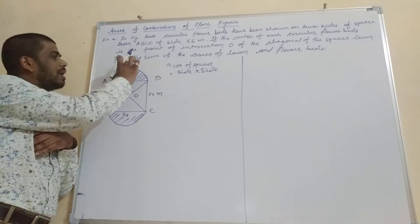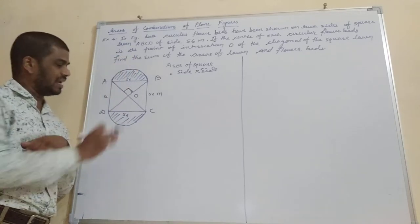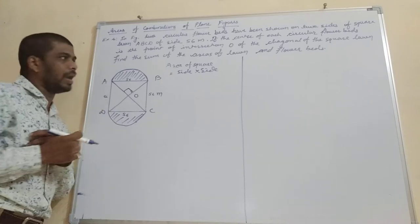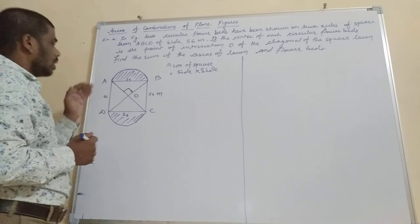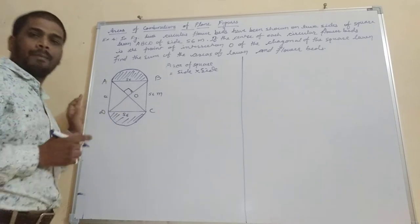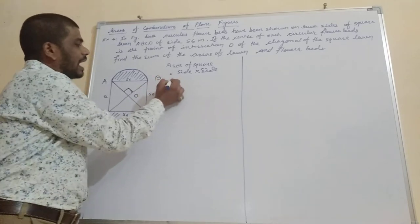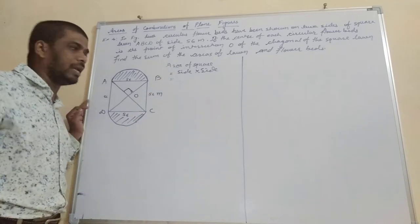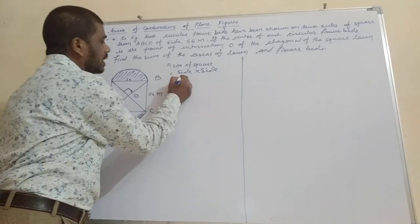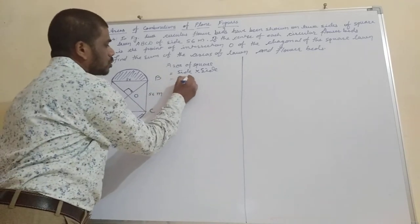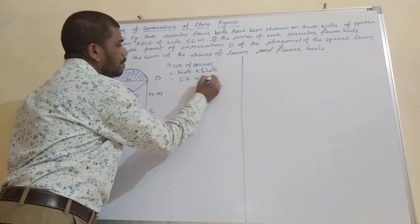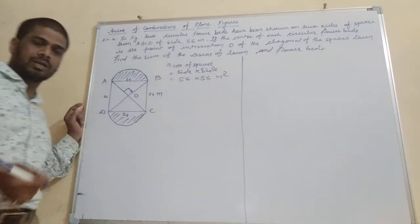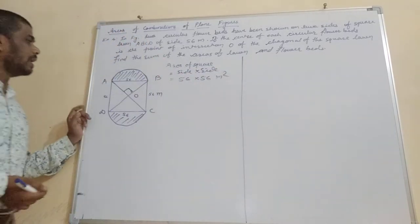Whatever area we get for one segment, the same area will be for the other. So first we will find the area of the square. Area of a square is side × side. The side is given as 56, so 56 × 56 meter square. We will not multiply yet — we will take common later.